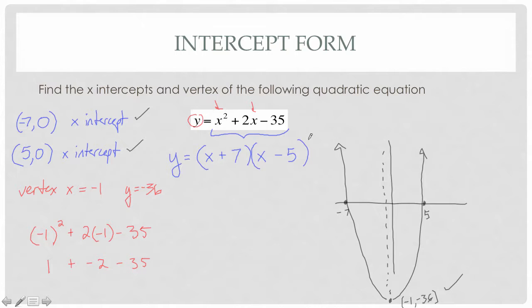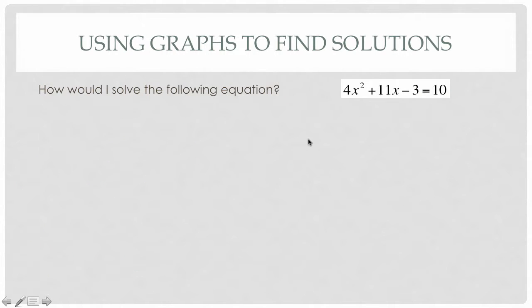That's why factored form or intercept form is really helpful — we're using our factoring to understand quadratic equations. Now let's get into solving and finding solutions. How would I solve 4x squared plus 11x minus 3 equals 10? This is tricky because normally we want to get x by itself, but we have x squared and x, which are not like terms and can't be combined. We need strategies beyond what we used for linear equations.